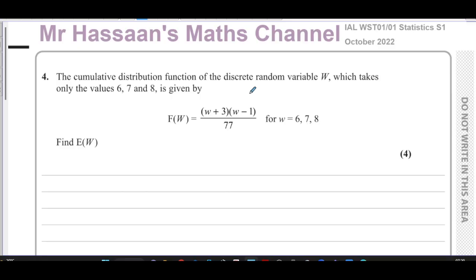And it's given by F(W) equals (W + 3)(W - 1) over 77, for W equals 6, 7, and 8. So what it means is there is a discrete random variable.